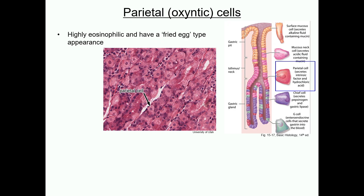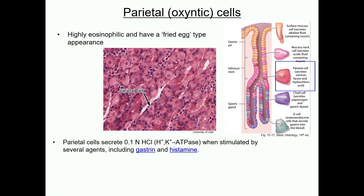Parietal cells are easily the most recognizable cell in the stomach. They are pyramidal or round large cells and often have two nuclei. They have a very characteristic flattened fried egg appearance. These cells are present among the mucous neck cells and throughout the deeper areas of the glands. The cells secrete hydrochloric acid into the stomach lumen when stimulated, in part by gastrin and histamine.